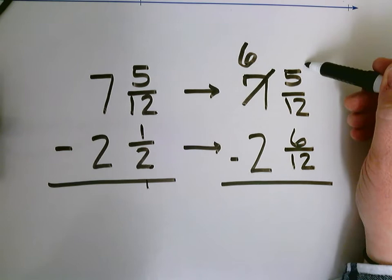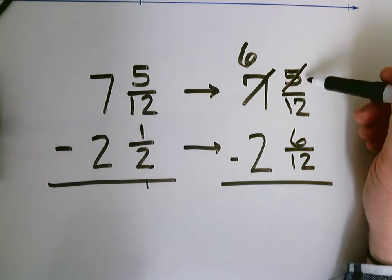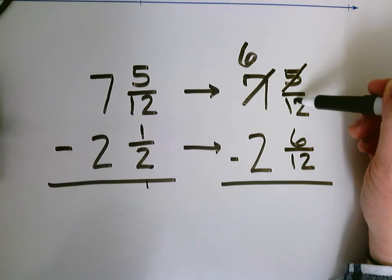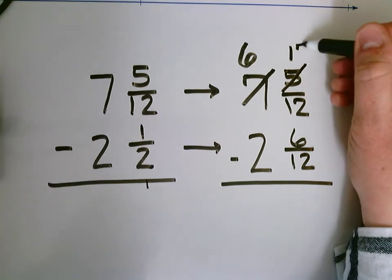And the trick, the shortcut is just think about your denominator and add that to your numerator because that's how many you need for 1, 12 twelfths. So I'm going to add 12 to 5 and get 17 twelfths.